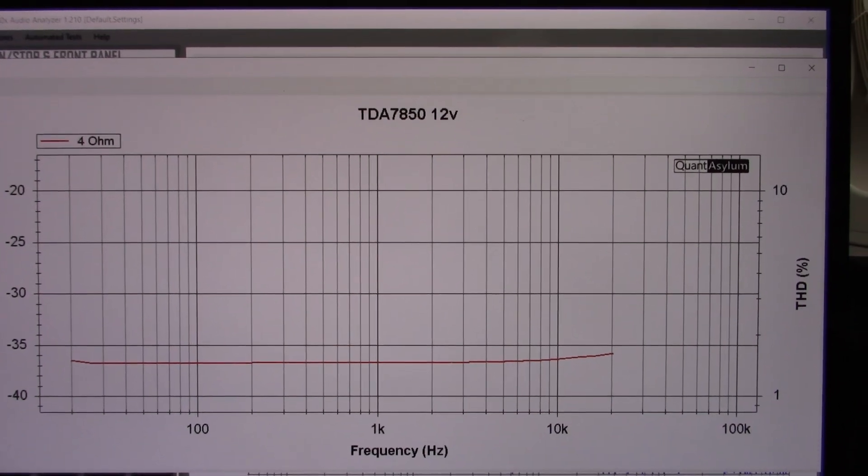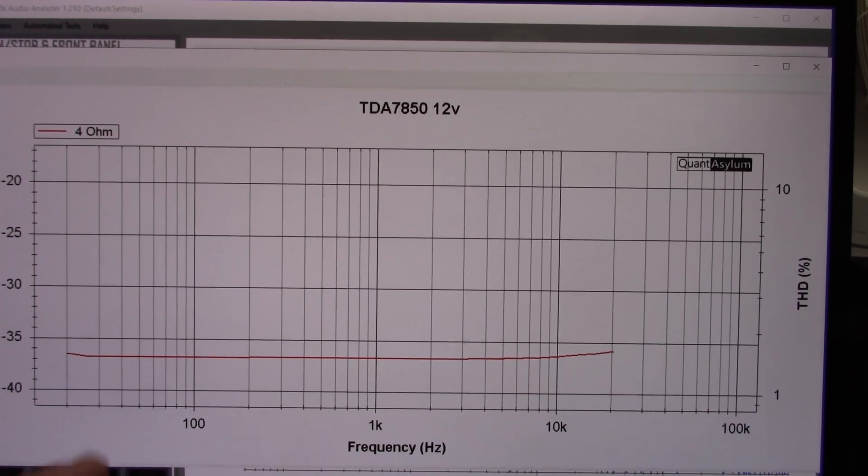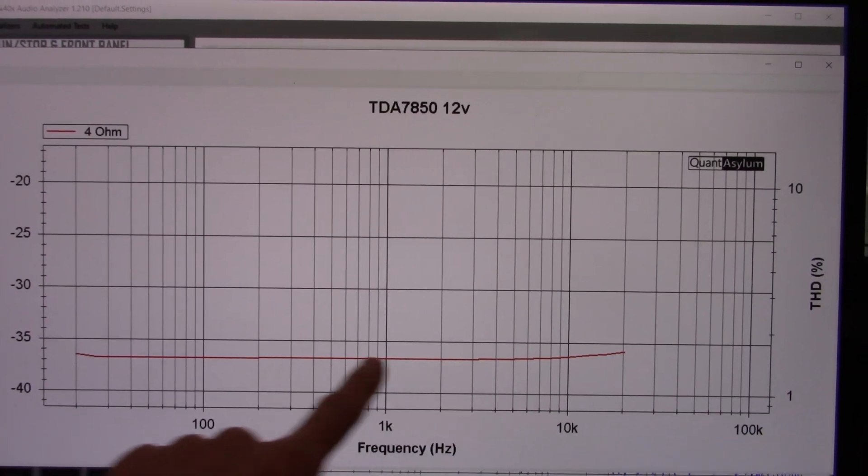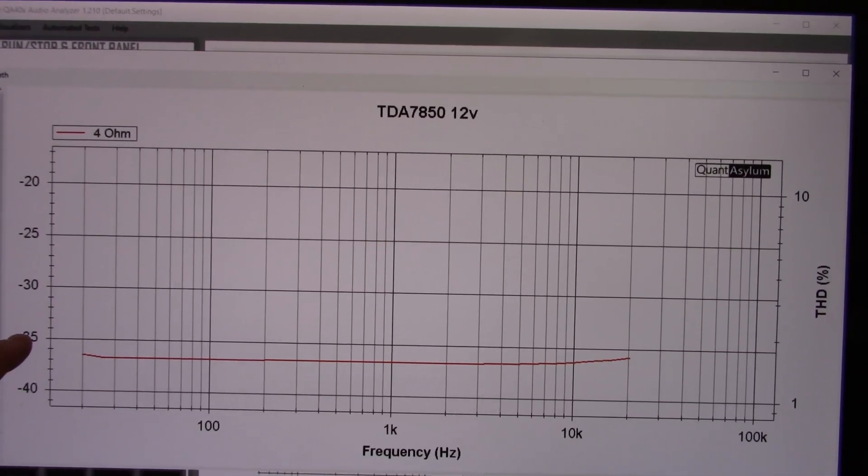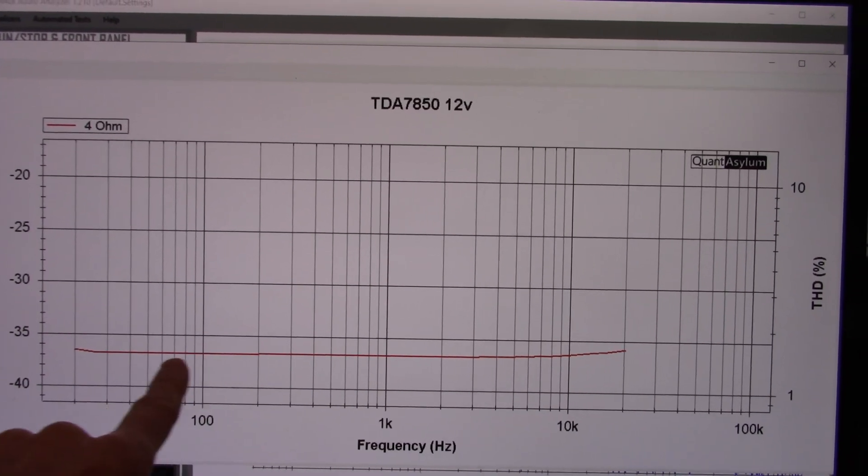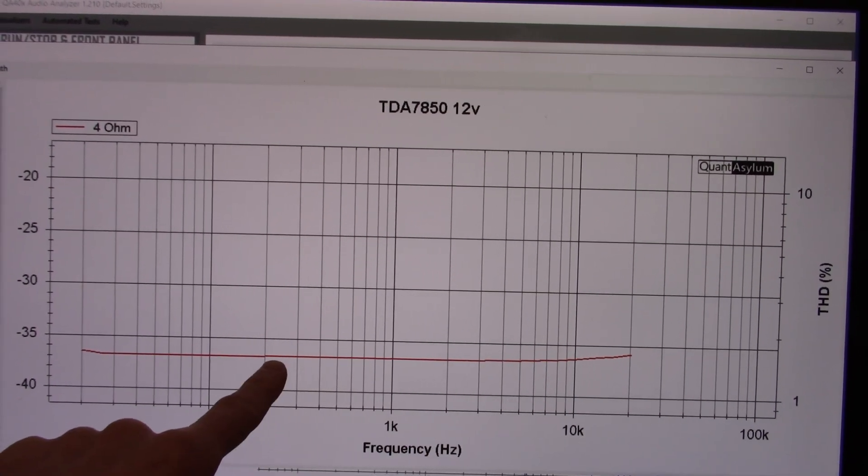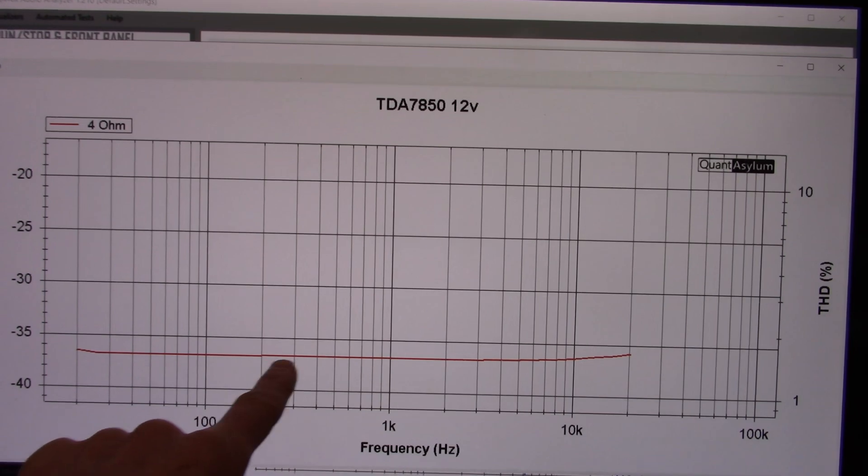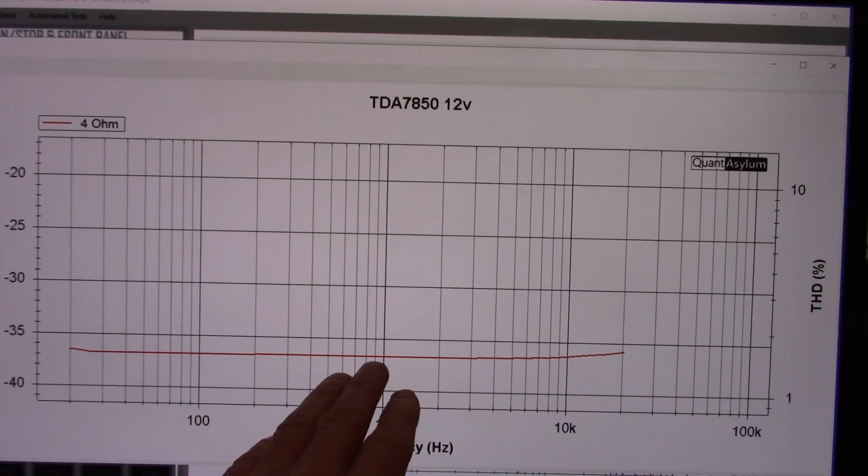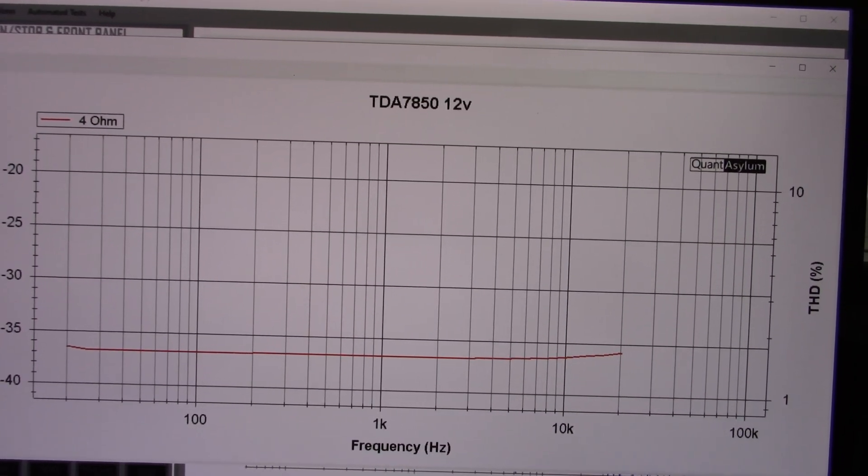Frequency versus distortion. Only measuring at four ohms here because you know what's the point. And well it's pretty flat across the band here around minus 36 and a half or so dB which is around 1.5 percent total harmonic distortion. I like that it's flat, it's just that the distortion is high across the band measuring at around two watts.